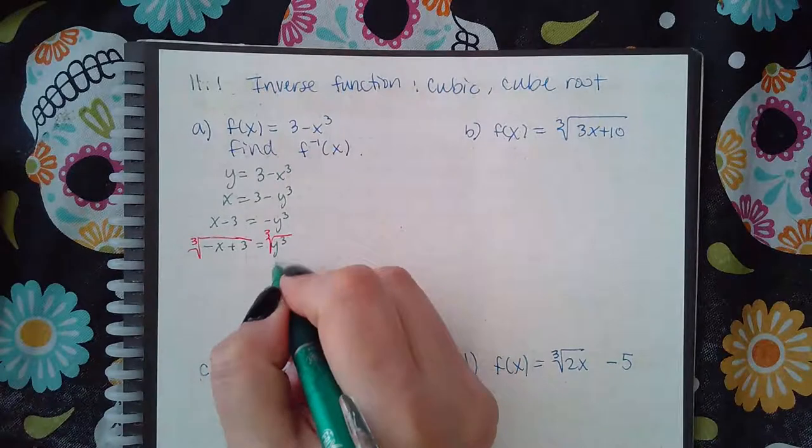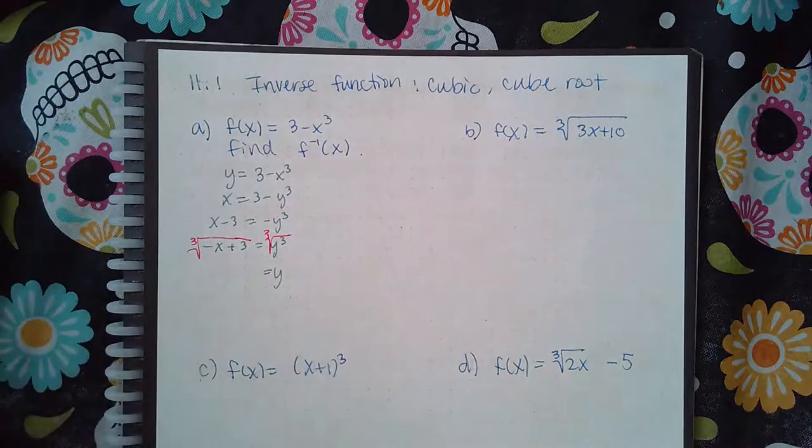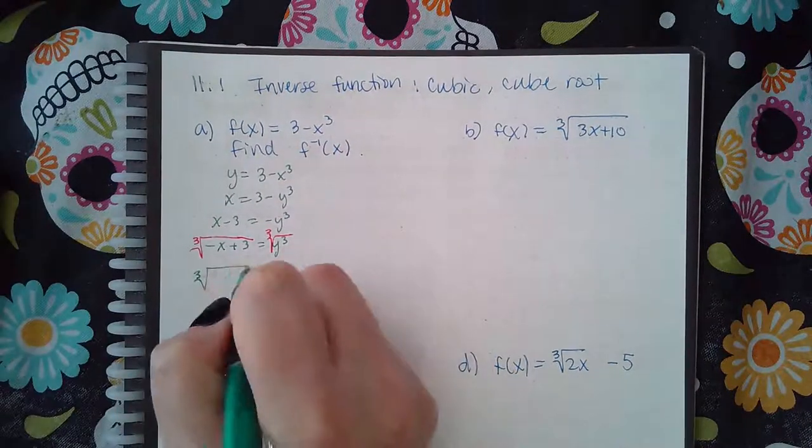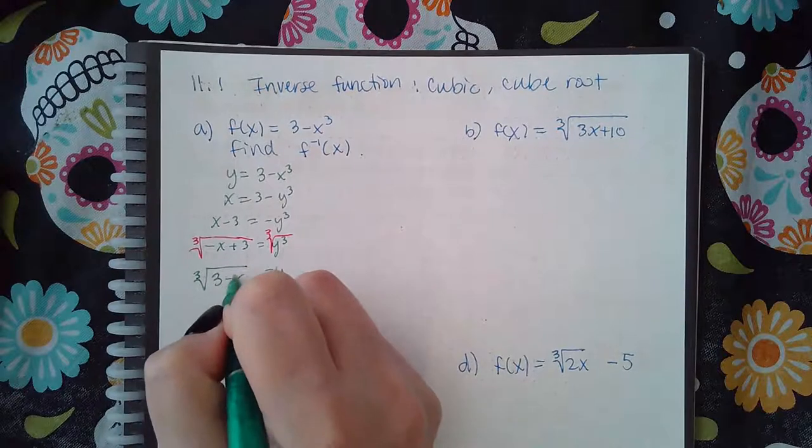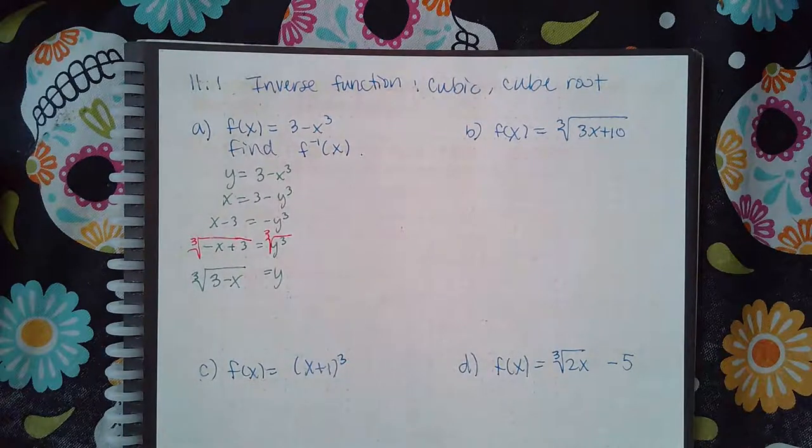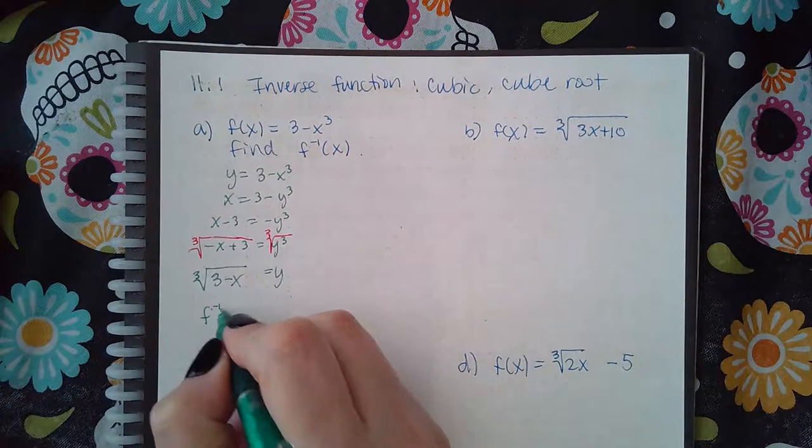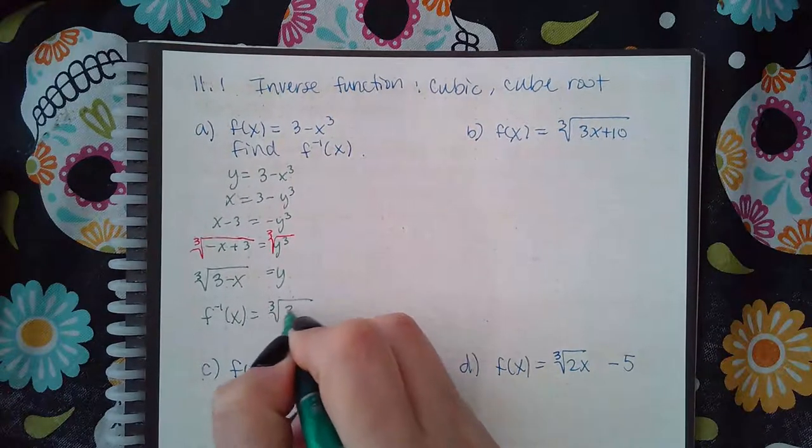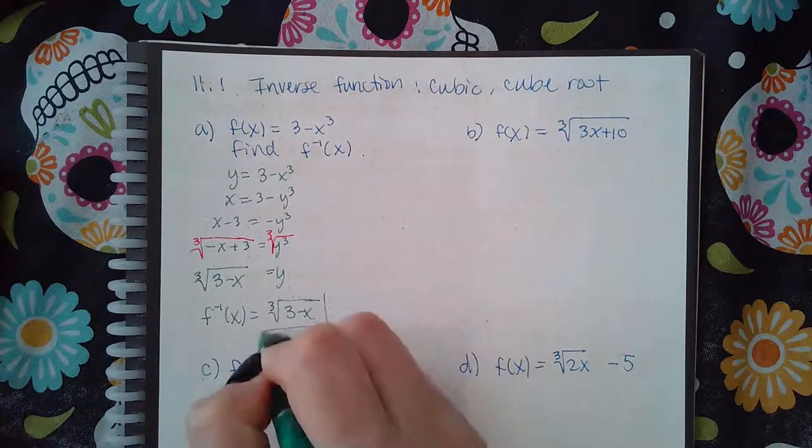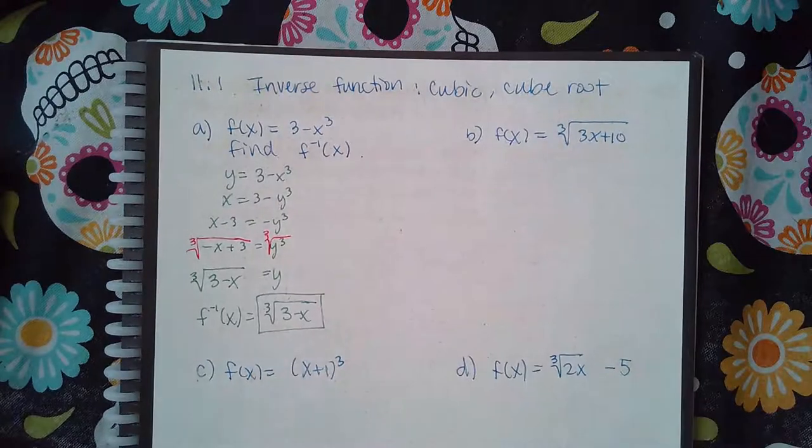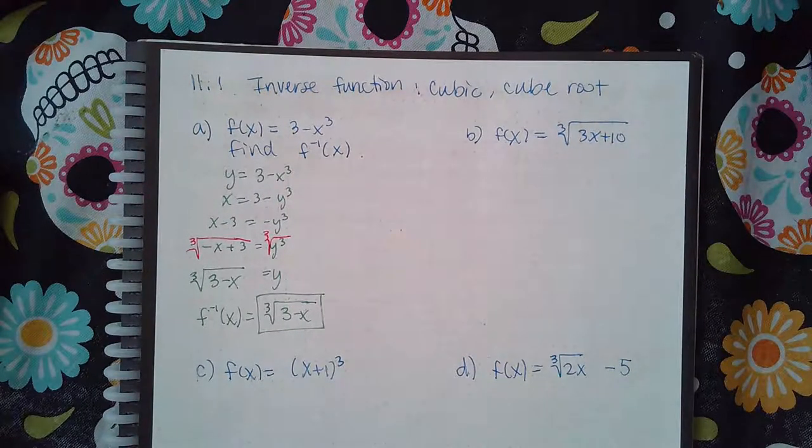And so then I get y by itself and I get the cube root. I'm going to rearrange this just so that the negative x is not in the front, and then I write the inverse notation. And that's the final answer with the 3 minus and the x both under the radical.